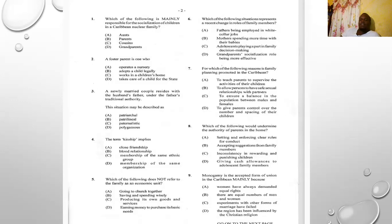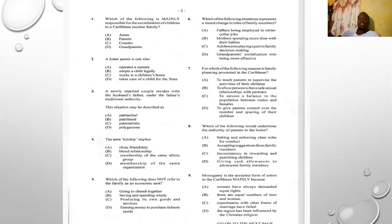Number eight: which of the following would undermine the authority of a parent in the home? A) setting and enforcing clear rules for conduct, B) accepting suggestions from family members, C) inconsistency in rewarding and punishing children, D) giving cash allowances. The answer is C — inconsistency in rewarding and punishing children. Parents should be consistent, because if you're inconsistent with punishment children will not take you seriously, and if inconsistent with rewards children won't feel motivated to do what they're supposed to do.